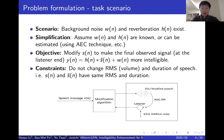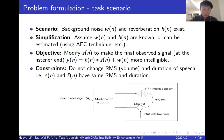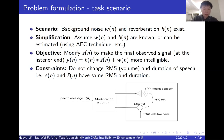To simplify the problem, we assume noise and reverberation are known, or at least can be estimated. Then our target can be formulated to modify the input signal S to make the final observed signal Y at the listener end more intelligible. Y can be represented as this equation. Here, S2 denotes the modified speech. We don't change the RMS energy and duration of speech because we have an energy constraint.